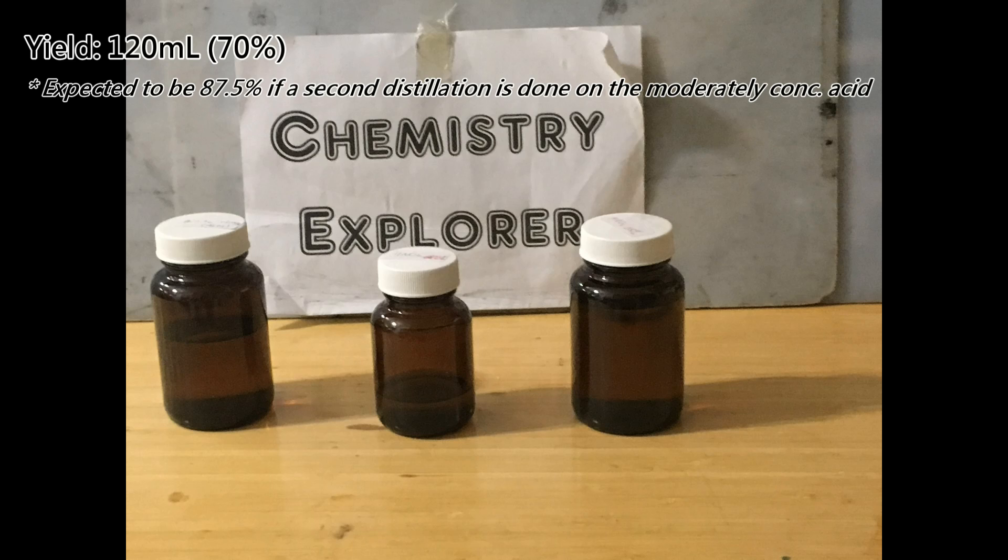Excluding the 70ml of moderately concentrated nitric acid, the yield was 120ml, which represents a yield of about 70%, which is not too bad. I believe that if I do a second distillation on the moderately concentrated acid, I can raise the yield to about 150ml, which is about 87.5%.